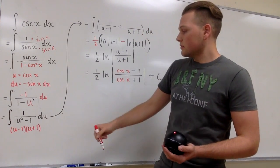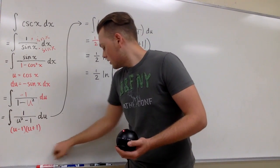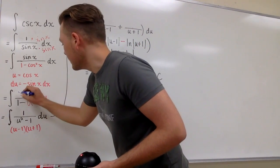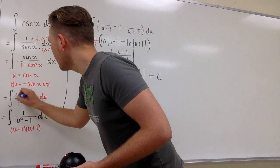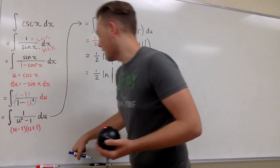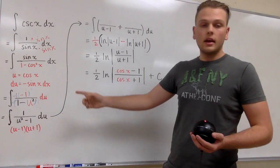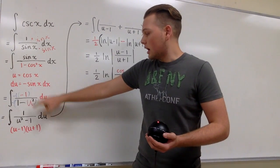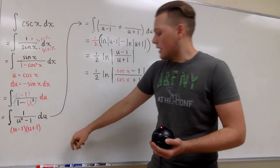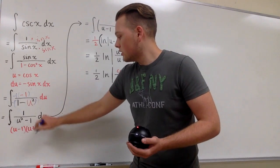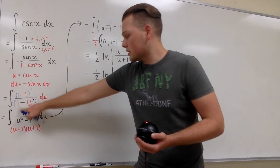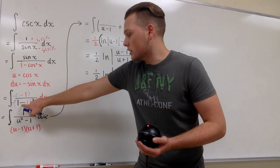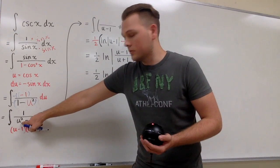Now we're going to clean this up a bit by multiplying the top and bottom by negative 1. By doing that the top becomes positive 1, and by distributing in the negative 1 we get our original positive 1 to be negative 1 and our initial negative u squared to be positive u squared.